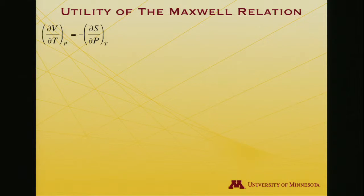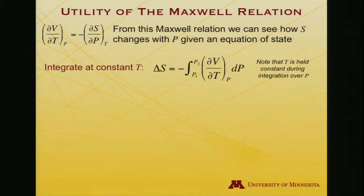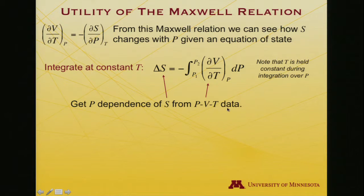If I choose to exploit this Maxwell relation, I am likely to isolate the entropy and see how entropy changes with pressure given an equation of state — a relationship between P, V, and T. My mechanism will be to integrate at constant temperature ∂V/∂T times dP, integrated from an initial pressure to a final pressure, with the negative sign moved to the left side. So I get the pressure dependence of entropy simply from knowledge of PVT data.